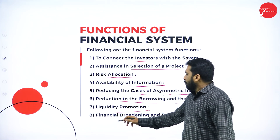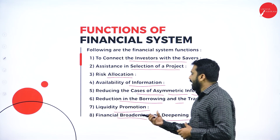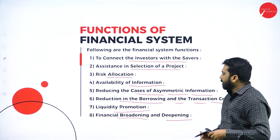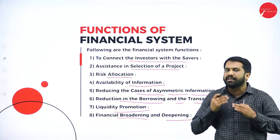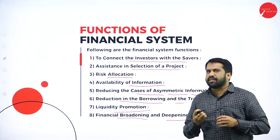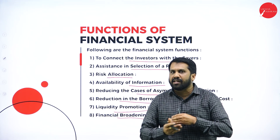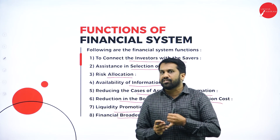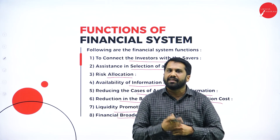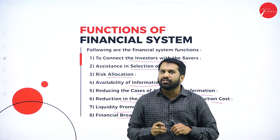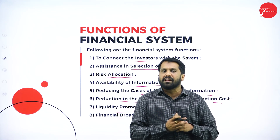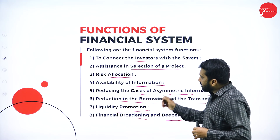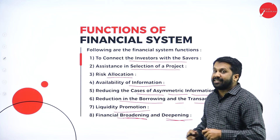Seventh: liquidity promotion — there will be promotion for your cash liquidity. Eighth: financial broadening and deepening. Financial broadening means expanding the investment mindset. Earlier, 90 percent of people were in government jobs and received pension and retirement benefits. Now 90 percent are in private institutions with no job security, which is why people started investing in pension plans and insurance plans. This broadening and deepening of investment is a key function of the financial system.